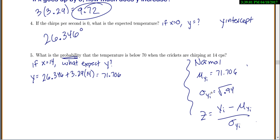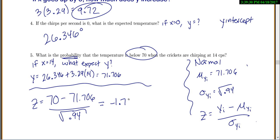So it seems a little bit different, but we've done this variation of z just over and over and over again. Anytime you want a probability of the normal distribution, it's the value you're interested in minus the expected value over standard deviation. So they're interested in is the temperature below 70. So we'll do 70 minus our expected value, which is 71.706 over the square root of 0.94. Which equals negative 1.76.